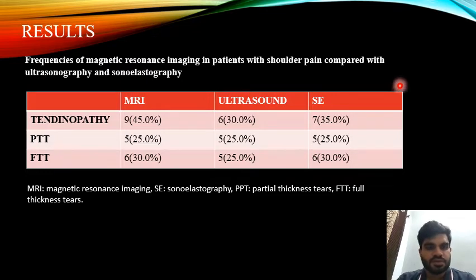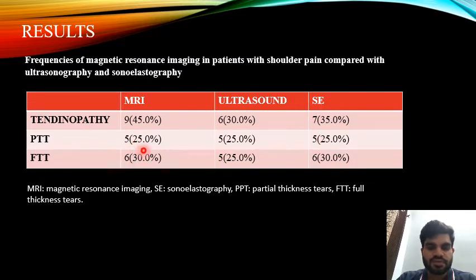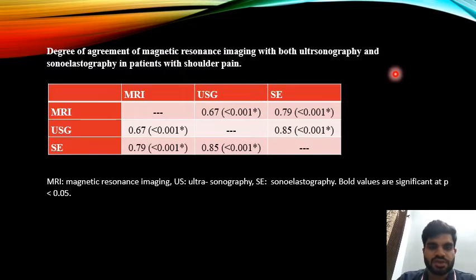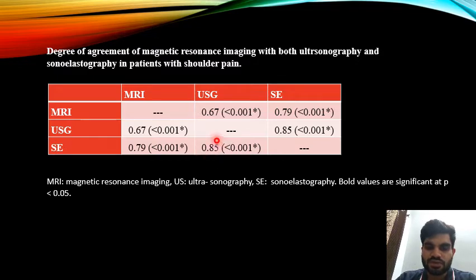Results. The frequency table compares MRI findings with ultrasonography and elastography. Tendinopathy was found in nine patients on MRI, six on ultrasound, and seven on sonoelastography. Partial thickness tear was found in five patients on both MRI and sonoelastography. Full thickness tear was found in six patients on MRI, five on ultrasound, and six on sonoelastography. The correlation coefficient between MRI and ultrasound is 0.67; between MRI and sonoelastography is 0.79; and between sonoelastography and ultrasound is 0.85 — all statistically significant.